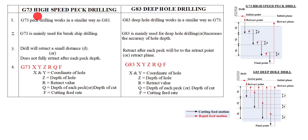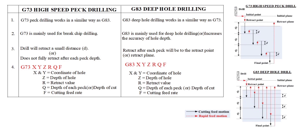G73 code I already taught in the last video — I will give the video link in the description box, please refer to that one. G73 peck drilling works in a similar way as G83, but the key difference is how the operation goes. G73 is mainly used for chip breaking; G83 is mainly used for deep hole drilling or to increase the accuracy of hole depth.